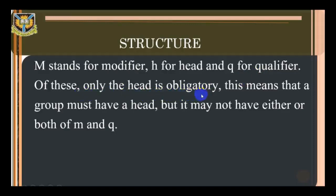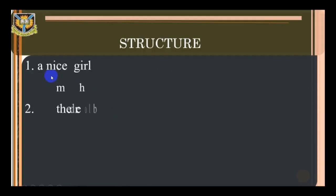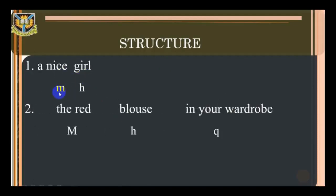Example one: 'a nice girl' — 'a nice' is the modifier and 'girl' is the head. Example two: 'the red blouse in your wardrobe' — 'the red' is the modifier, 'blouse' is the head, and 'in your wardrobe' is the qualifier. A clause has the structure S, P, C, A — subject, predicator, complement, and adjunct. The subject is associated with the nominal group; the verbal group serves as the predicator; the complement is associated with the nominal group; and the adjunct with the adjectival group, adverbial group, and prepositional group.